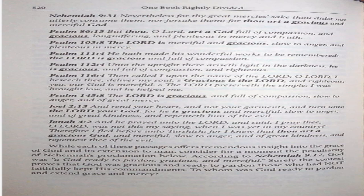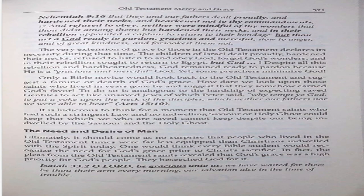While each of these passages offers tremendous insight into the grace of God and its extension to man, consider for a moment the peculiarity of Nehemiah's proclamation. According to Nehemiah 9:17, God was a God ready to pardon, gracious and merciful. Surely the context proves that God was gracious and ready to pardon those who had not faithfully kept his commandments. To whom was God ready to pardon and extend grace and mercy? Nehemiah 9:16-17. But they and our fathers dealt proudly and hardened their necks and hearkened not to thy commandments and refused to obey. And neither were mindful of thy wonders that thou didst among them, but hardened their necks. And in their rebellion appointed a captain, returned to their bondage. But thou art a God ready to pardon, gracious and merciful, slow to anger and of a great kindness and forsookest them not.